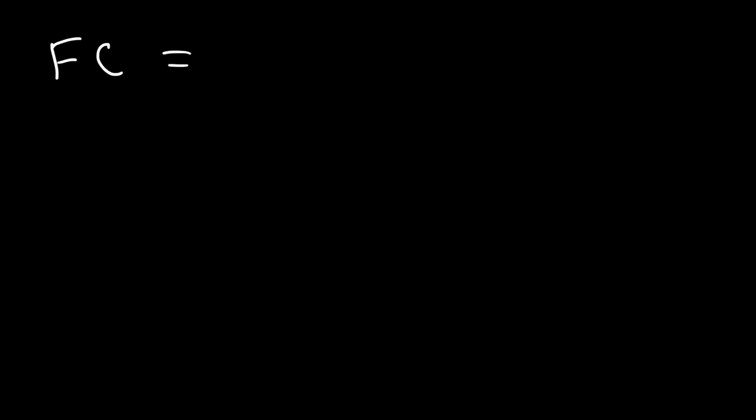In this video, I'm going to give you a basic introduction into formal charge and how to calculate it. Here's the equation that I like to use — it's a simplified version of the one you might see in your textbook. The formal charge is equal to the number of valence electrons minus the sum of the number of bonds and dots in the element that you're considering.